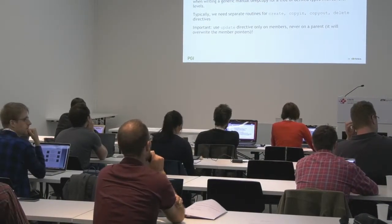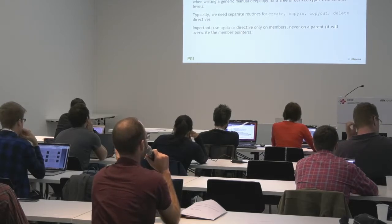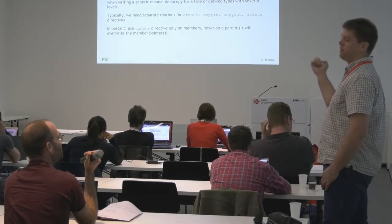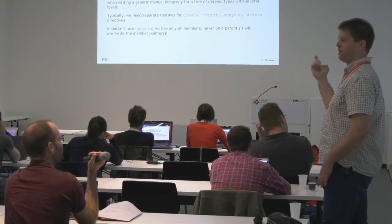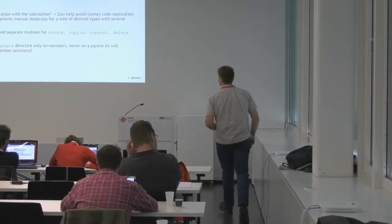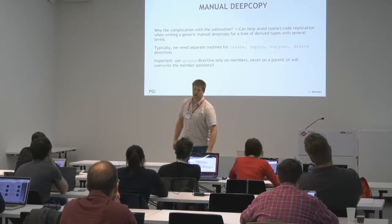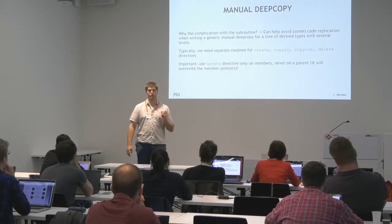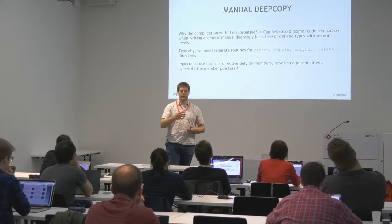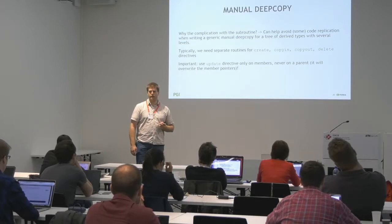Q: Does it still work if you have nested user-defined types - can you update them? A: If you have nested types, you want to use an update directive on the leaves of the type tree, not on a member that is itself of another derived type. Is the main idea clear why we need to treat these data structures differently ourselves and how the steps proceed?